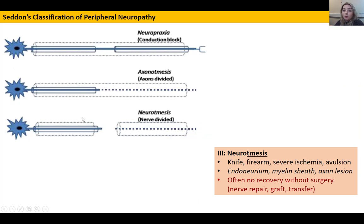The most severe form of injury is neurotmesis. In a neurotmesis, the axon is damaged, the myelin sheath is damaged, and the endoneurium is damaged — and possibly the perineurium and epineurium as well. Ways this can happen include a stab wound, gunshot, severe ischaemia, or an avulsion injury where the nerve is completely pulled apart. Depending on the extent of injury, recovery is often very poor or absent, and the only recourse is nerve repair, nerve graft, or other surgical intervention.